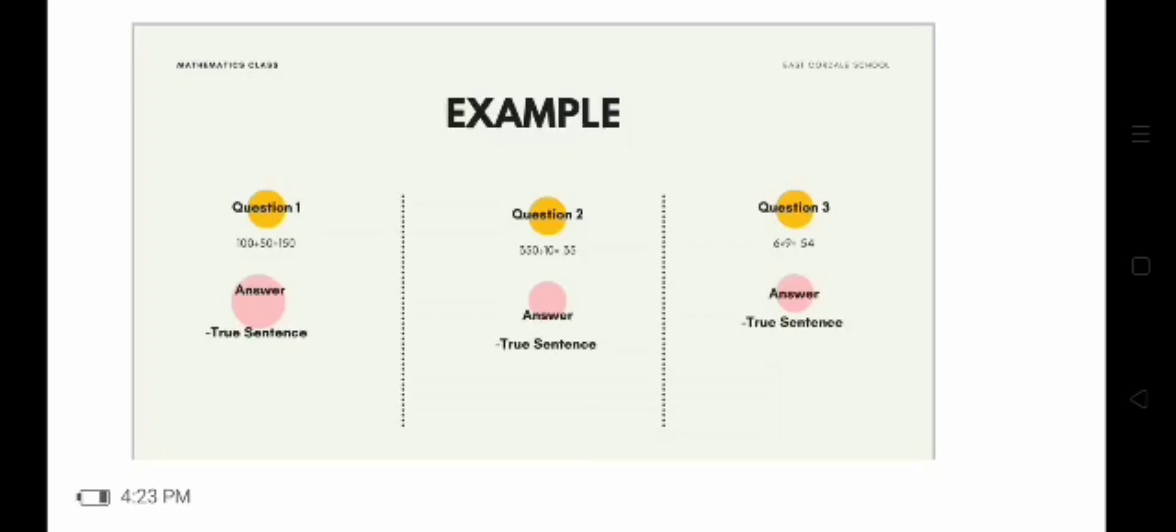That's why it becomes a true sentence. Question number 3. 6 times 9 equals 54. True sentence also. As I said, a problem becomes a true sentence if its answer is correct. So like this question number 3, 6 times 9 equals 54. True sentence. Questions number 1, 2, 3 are true sentences because it becomes a true sentence if the answer is accurate.